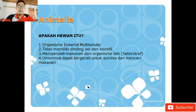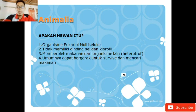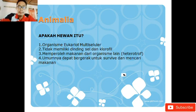Animalia tidak bisa membuat makanannya sendiri. Makhluk hidup yang tidak bisa membuat makanannya sendiri disebut dengan heterotroph. Sedangkan yang bisa membuat makanannya sendiri, yaitu tumbuhan atau yang berperan sebagai produsen, disebut dengan autotroph. Umumnya animalia dapat bergerak, pergerakan ini tujuannya untuk survive atau bertahan hidup dan untuk mencari makanan.